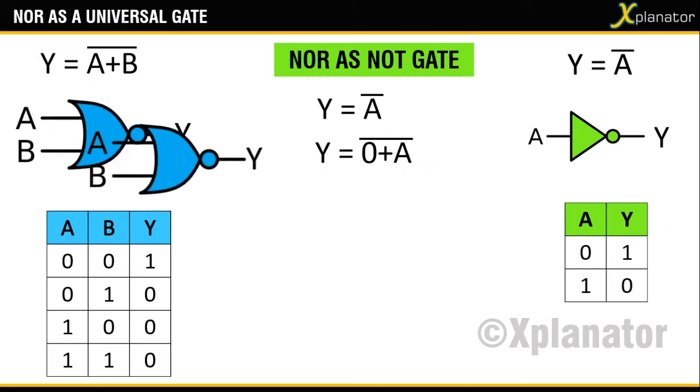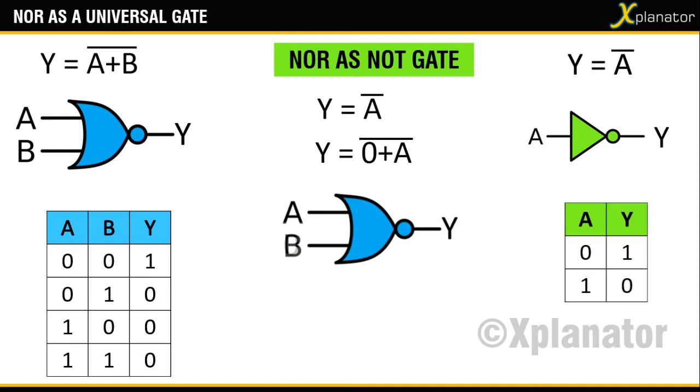Take the NOR gate and change one of the inputs to LOW. And with that, you just created a NOT gate out of NOR gate.